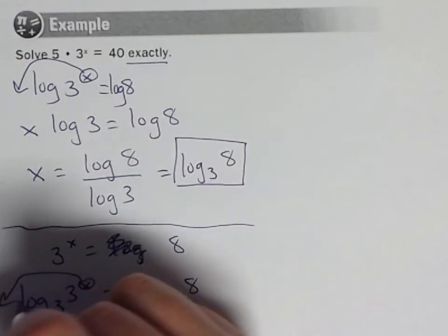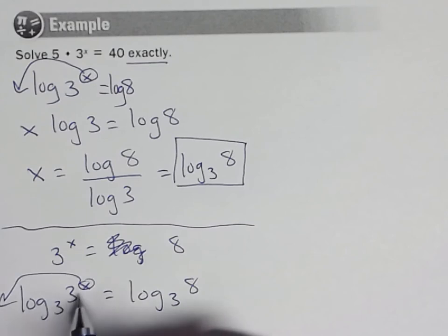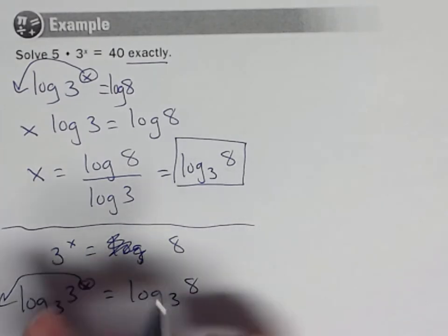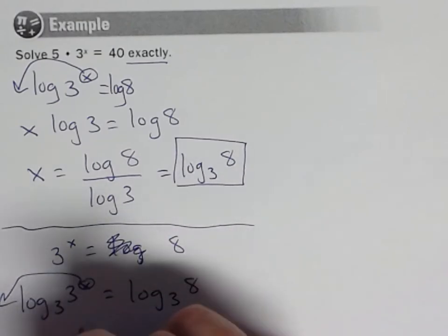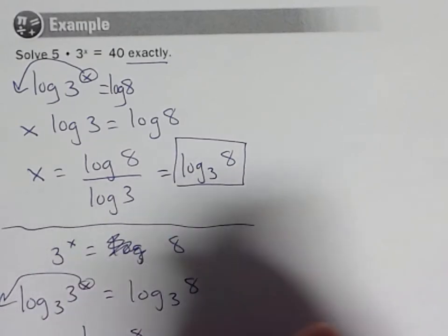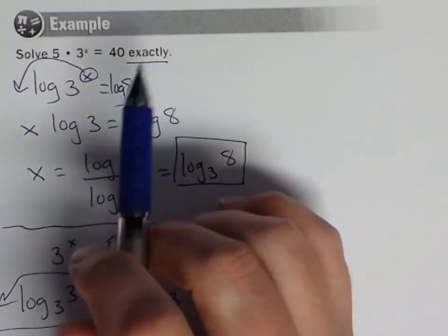So x—well, what's the log base 3 of 3? 3 to the what equals 3? Well, it's just 1. So log base 3 of 3 is 1. So x equals log base 3 of 8. That would be a shortcut if you feel comfortable doing that.